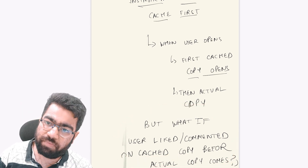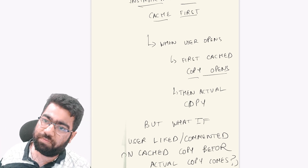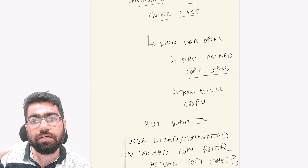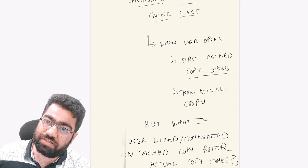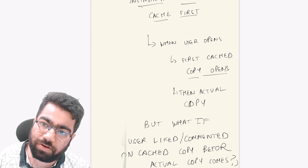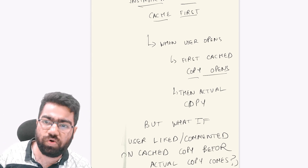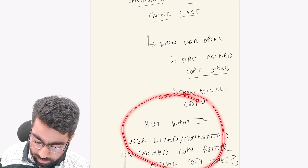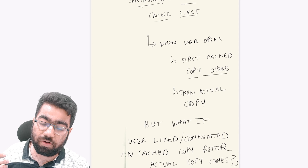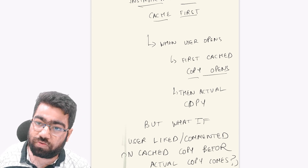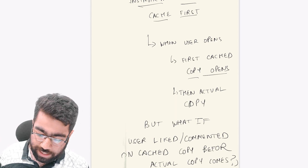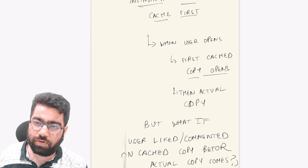There can be some issues with this approach. What if the user interacted with something on the cached copy? For example, there was an image and the user commented on the cached copy. By the time the data came from the server, things have changed — there have been more comments, more likes. It is also possible that the user no longer has permission to comment on that image or video. How will Instagram resolve these kinds of issues? Let me know your answer in the comments — what possible scenarios or solutions you think can be done — and we'll discuss this in another video someday.